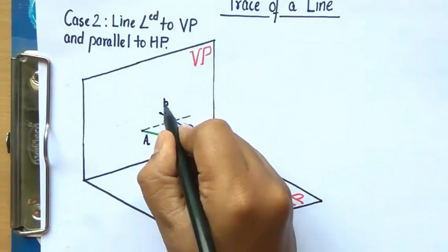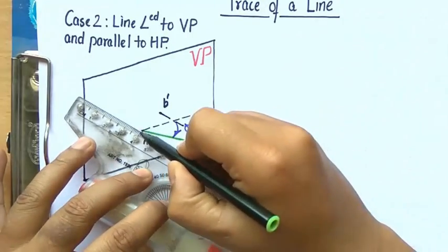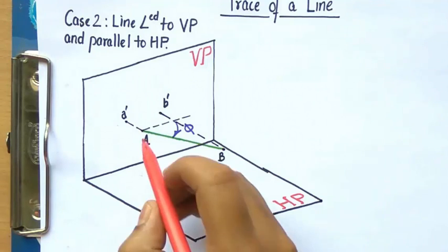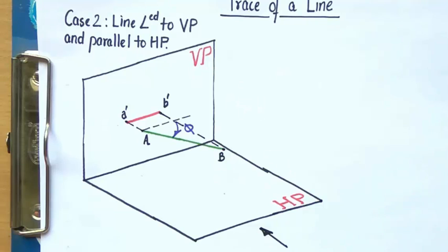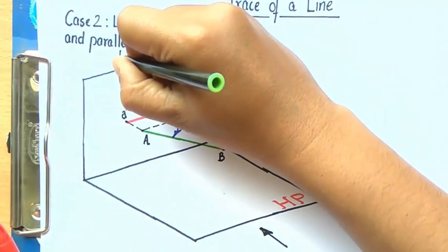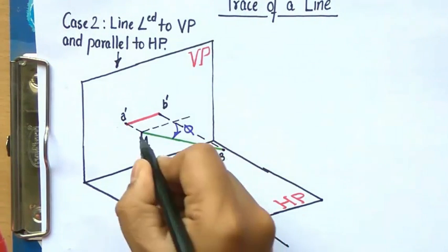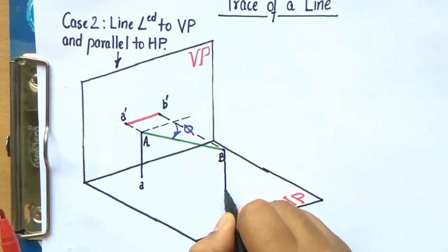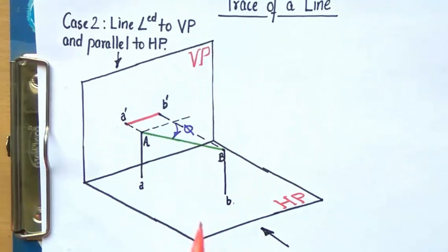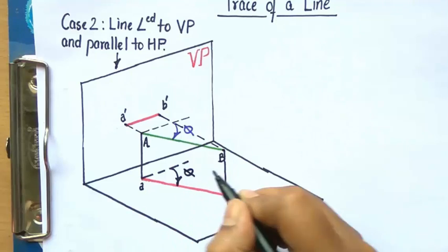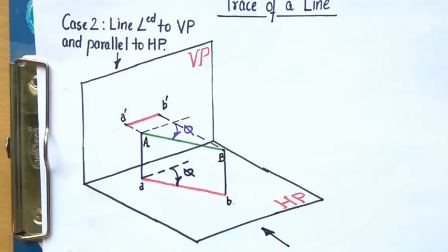This is the front view of point B — B'. It meets the vertical plane somewhere here, so this is the front view of point A — A'. Joining A'B' gives the front view. Looking at this line from the top, the line intersects the horizontal plane somewhere here — this is point A, the top view. On producing, it intersects somewhere here — this is point B. Joining A and B gives the top view. This particular angle seen from the top is angle phi.